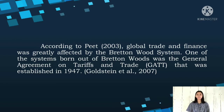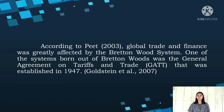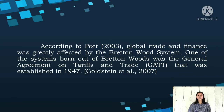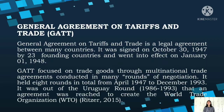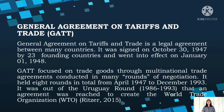According to Pitt in 2003, global trade and finance was greatly affected by the Bretton Woods system. One of the systems born out of Bretton Woods was the General Agreement on Tariffs and Trade, established in 1947. GATT is a set of multilateral trade agreements aimed at the abolition of quotas and the reduction of tariff duties among the contracting nations. It was signed on October 30, 1947 by 23 founding countries and went into effect on January 1, 1948. GATT focused on trade goods through multinational trade agreements conducted in many rounds of negotiation, holding 8 rounds in total from April 1947 to December 1993.